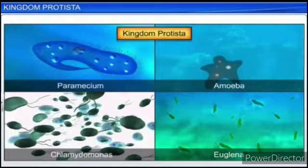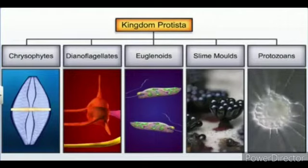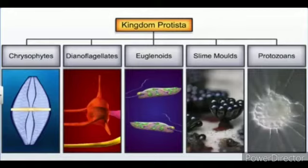The boundaries of this kingdom are not well defined. It may include photosynthetic protists. Based on their characteristics, protists are classified into: Chrysophyta, Dinoflagellates, Euglenoids, Slime Molds, and Protozoans.